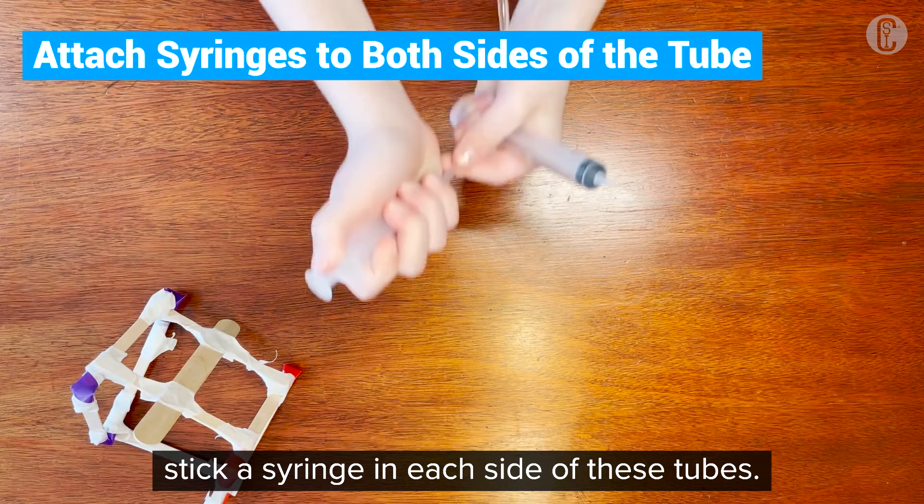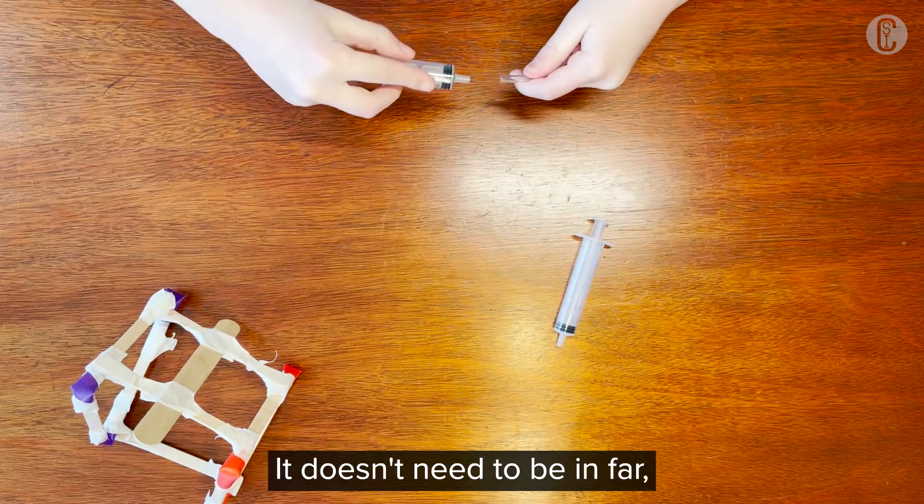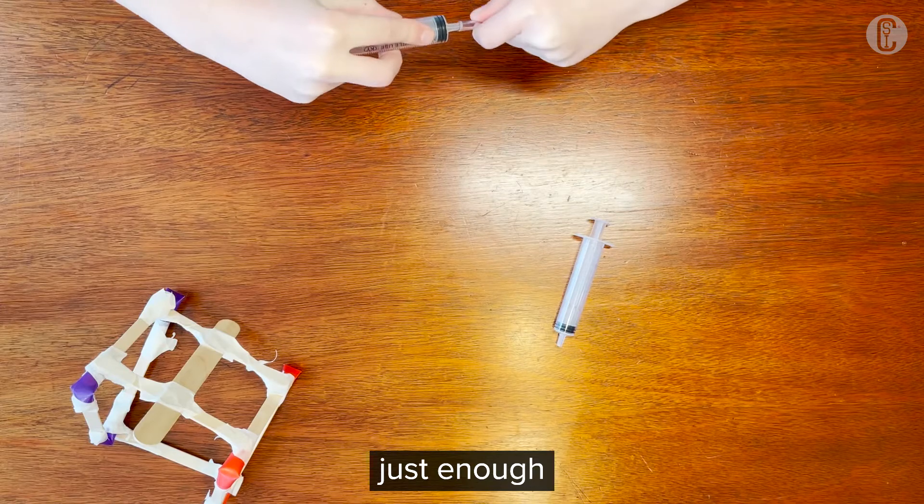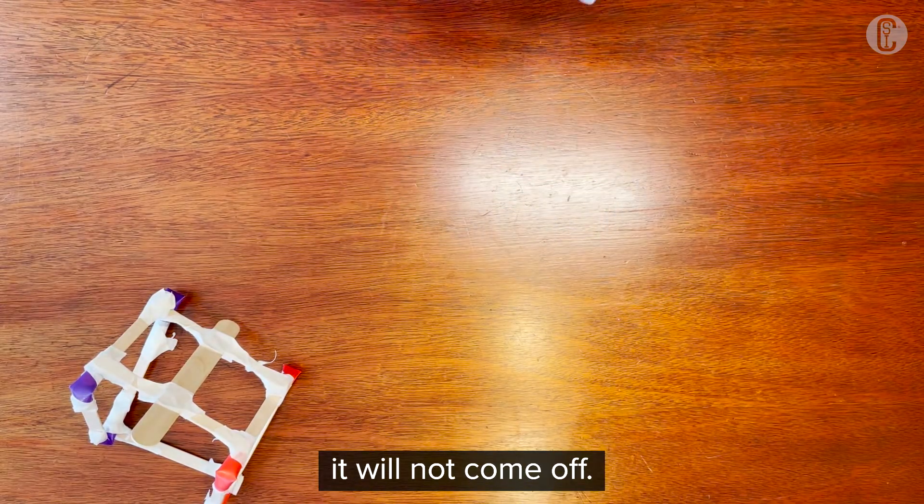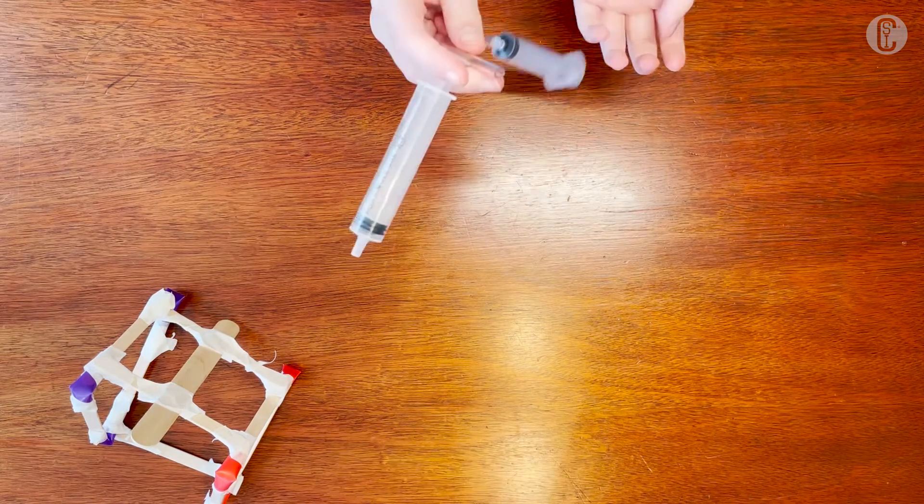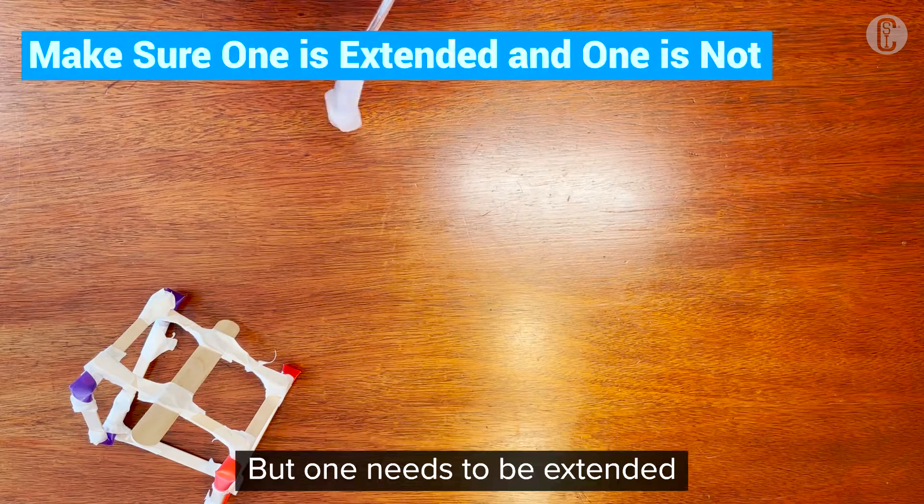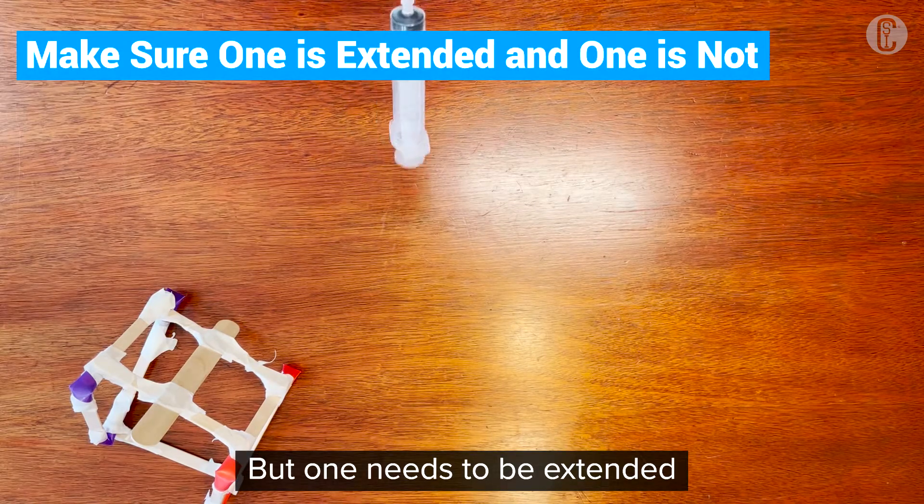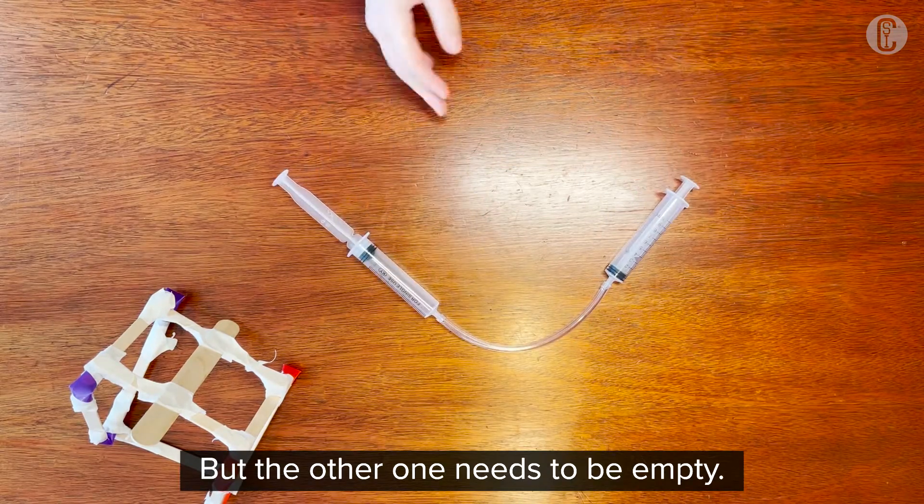So next, the tip of the syringe in each side of these tubes. It doesn't need to be in far, just enough that when air goes through it, it will not come off. But on one it needs to be extended and full of air, but the other one needs to be empty.